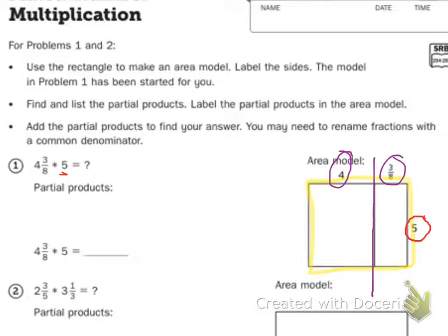So now I have to do my partial products. I'm going to start with my whole number. So it says, find and list the partial products, label the partial products in the area model.